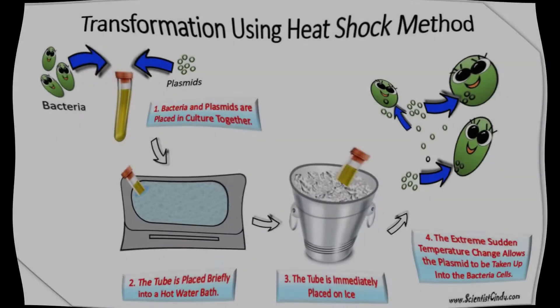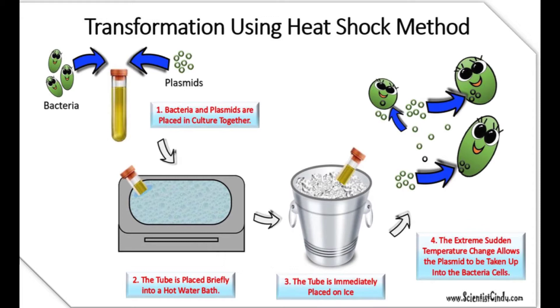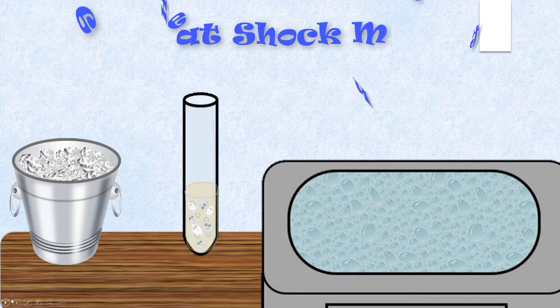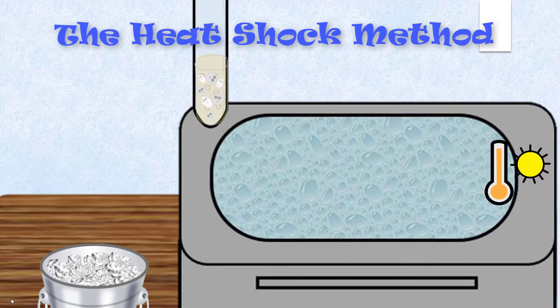Transformation can also be induced in a lab. There are several methods used in laboratories to induce competency. One of the most popular and easiest ways to induce competency in bacteria is the heat shock method.